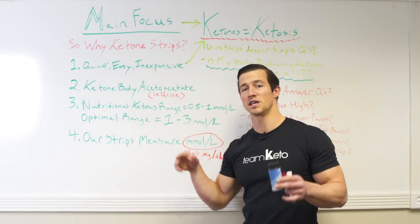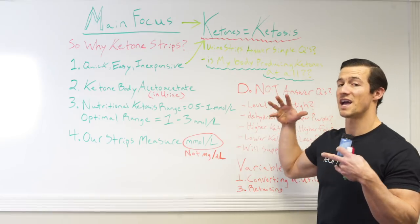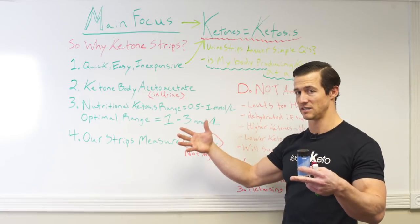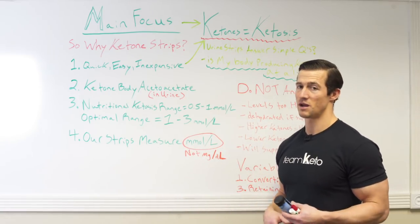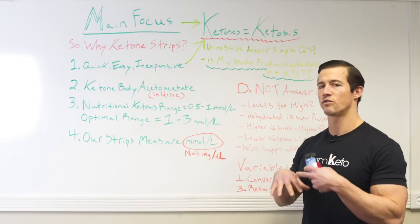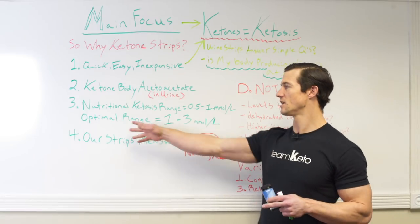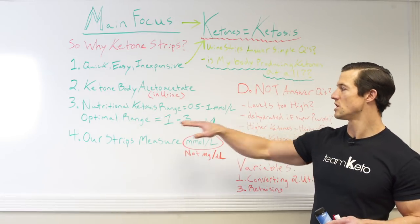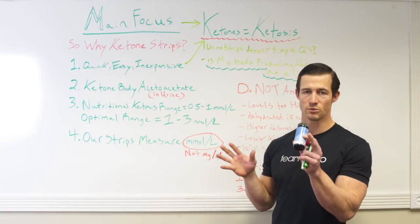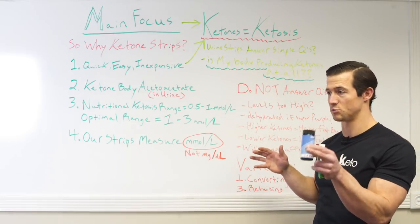Let's recap real quick. Number one: ketone testing strips are the quickest, easiest, and most inexpensive form to basically tell whether or not your body is producing ketones at all. Number two: it is measuring specifically the ketone body acetoacetate that is passed through the body into the urine — it's not measuring ketones from the breath or in the blood. So it's just a rough overall measurement of whether my body is producing ketones at all.